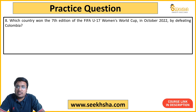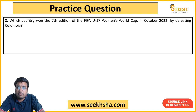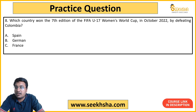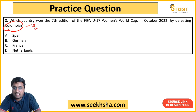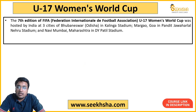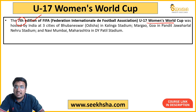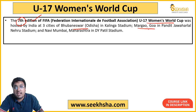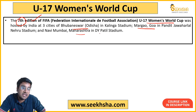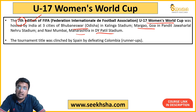Eighth question: The 7th edition of the FIFA Under-17 Women's World Cup was held in India. Which country defeated Colombia to win this World Cup? Options: Spain, Germany, France, or Netherlands. Colombia was the runner-up — remember that too, as it is sometimes asked. The winner is option A — Spain. The tournament was held across three Indian cities: Bhubaneswar's Kalinga Stadium, Margao Goa's Pandit Jawaharlal Nehru Stadium, and Navi Mumbai Maharashtra's D.Y. Patil Stadium.